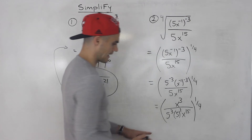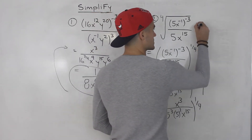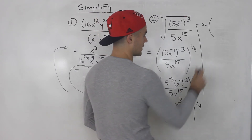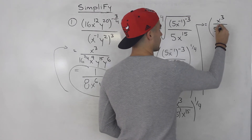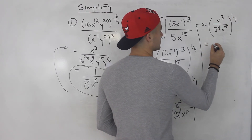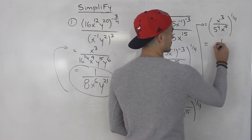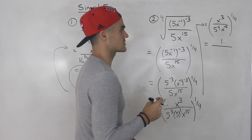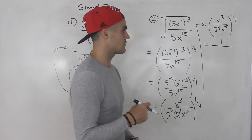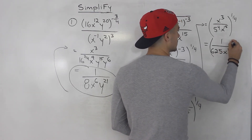Notice here how we have the same base: 5 to the power of 3 times 5 to the power of 1, so we can add the exponents, giving us 5 to the power of 4 on the bottom. So we have x cubed over 5 to the power of 4 times x to the 15, all to the power of 1 over 4. Then 3x up top and 15x on the bottom leaves 12x on the bottom. And 5 to the power of 4 is 625, so this becomes 1 over 625 x to the 12, all to the power of 1 over 4.